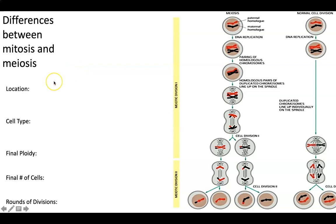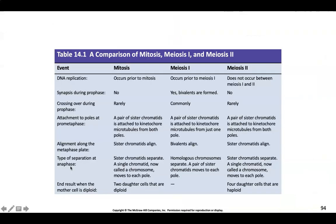This is a helpful document for comparing mitosis and meiosis. Mitosis is regular cell division; meiosis is where gametes are made. Ask yourself: where in the body does each occur? What cell types are involved? What is the final ploidy — haploid or diploid? What is the starting ploidy? What is the final number of cells, and how many rounds of division occur? You should be able to answer those comparison questions. There is also a detailed comparison covering all three stages: mitosis, meiosis 1, and meiosis 2.